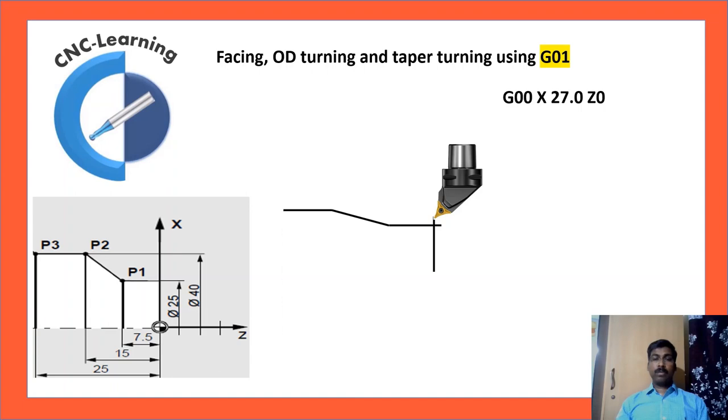G00, X27, Z0. So you can see the first diameter is diameter 25. So the cutter is positioned 2 mm diametrically above. That is, safe position. Z0 because we want to do the facing on Z0 position. And facing will happen with only X-axis command.